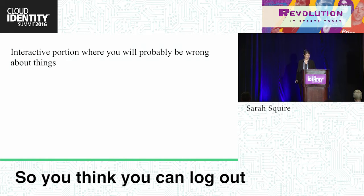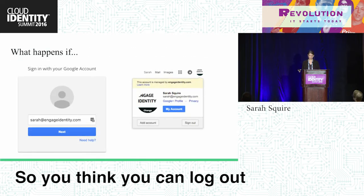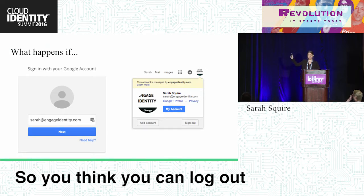So now we get to the exciting interactive portion where you get to be wrong about things. Let's start with something super easy. What happens when we log into Google? This is what Google looks like before you log in — gray person icon, empty box, requesting an email. On the left, I'm logged in as Sarah at Engage Identity. Let's talk about what happens when I push that button. Will I still be logged in or will I be logged out? Raise your hand if you think I will still be logged in — there will be no change. Raise your hand if you think I'll log out and go back to where I was on the left.